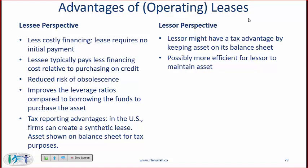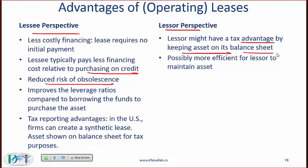The advantages of operating leases for the lessee include: less costly financing (the lessee typically pays less relative to purchasing on credit), reduced risk of obsolescence, improved leverage ratios compared to borrowing to purchase the asset, and possible tax reporting advantages in the US context. From the lessor's perspective, there may be a tax advantage from keeping the asset on its balance sheet, and it may be more efficient for the lessor to maintain the asset.